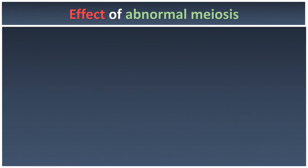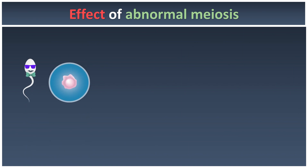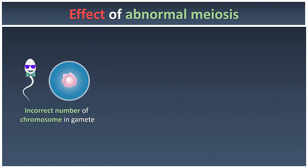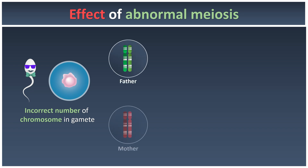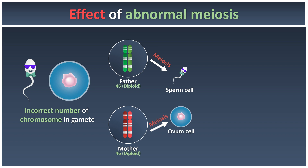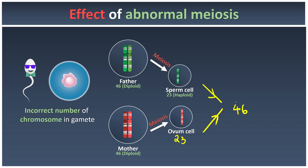But what are the effects of abnormal meiosis when the gamete produced has an incorrect number of chromosomes? For example, when the father and mother decide to have a baby, they need to produce sperm and ovum cells through meiosis. Meiosis will halve the number of chromosomes so that the sperm and ovum cells are haploid cells containing only 23 chromosomes. This ensures that when they fuse together to form the zygote, the zygote will have 46 chromosomes — this is how meiosis maintains the diploid number of chromosomes in the next generation.